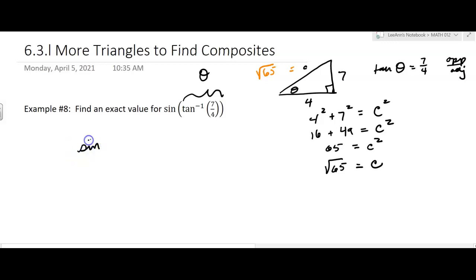So the sine of theta now. And I never actually find out what theta was. But I don't need to. I can find the sine of theta by doing opposite over hypotenuse. And then that's going to equal 7 over the square root of 65.